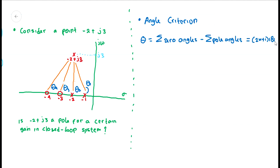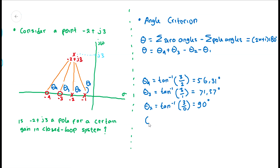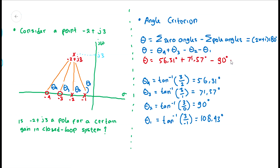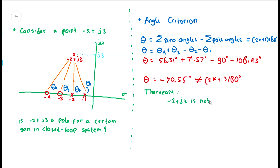We then compute the angle criterion of the system. The angle of the system equals the sum of zero angles minus the sum of the pole angles, and must equal an odd multiple of 180 degrees. After computing the value of each angle and calculating the sum, we get minus 17.55 degrees, which is not equal to any odd multiple of 180 degrees. We conclude that minus 2 plus j3 is not a pole in this closed-loop system, since it does not satisfy the angle criterion.